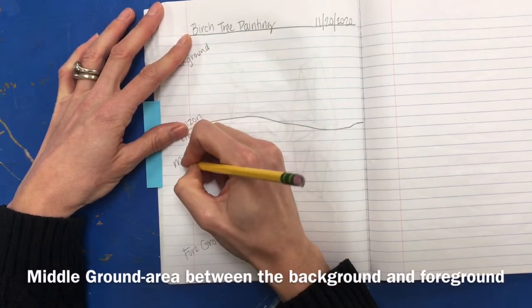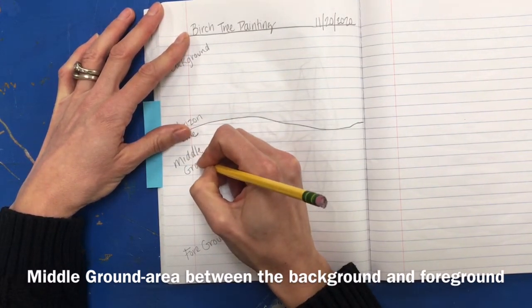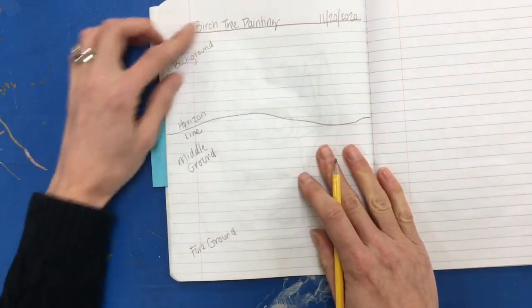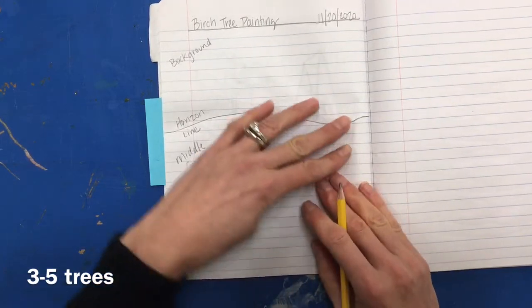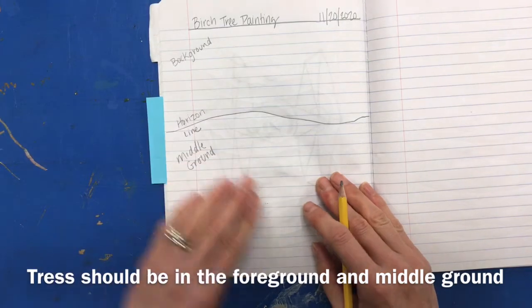All right, now we'll place our trees. I would like you to have a tree in your foreground and a couple in your middle ground. I'd like you to have three to five trees. The trees that are in the foreground are going to be bigger than the trees that get farther back into the middle ground.